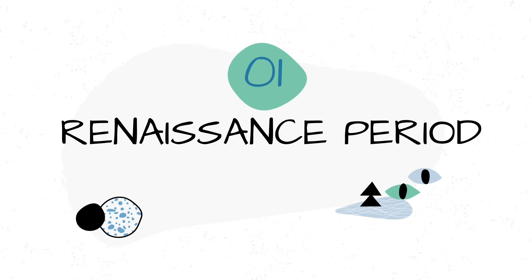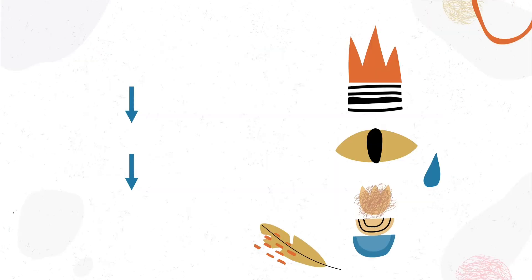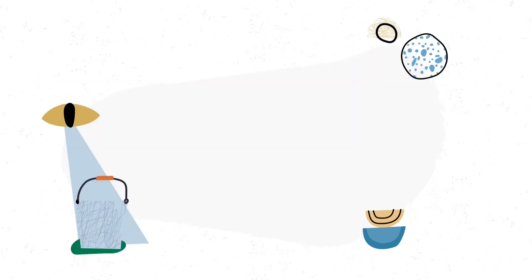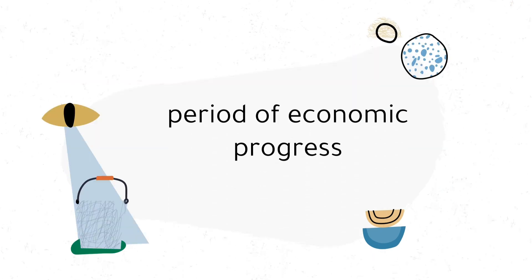Let's talk first about the Renaissance period. Renaissance comes from the word 'renait,' which means rebirth. This period was the period of economic progress. They made few advances in science and art, and this is the transition from darkness to lightness.